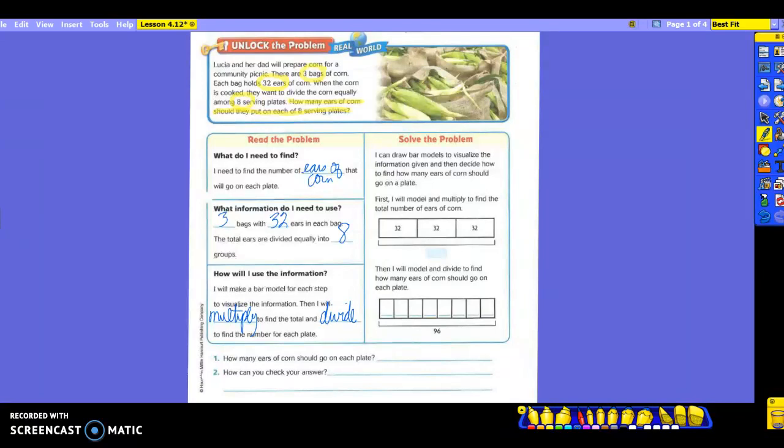So you're first going to multiply to find a total. Once you have that total, then you're going to divide it by the eight plates that they're asking you to put them on. Everybody good so far? So now over here on the right, you're going to see how they solved the problem. You're going to draw bar models to visualize the information that's given to you. And then decide how to find how many ears of corn should go on a plate. So take a look at what they did first.